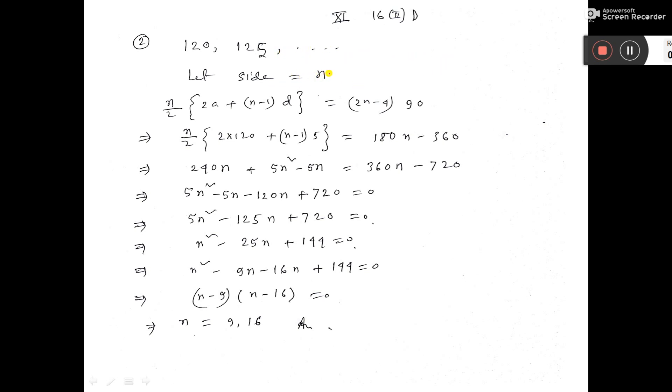So I consider n sides of that polygon. Then we can find the total sum of angles in two ways. One is 2n minus 4 into 90 degrees, and another is n by 2 into 2a plus n minus 1 into d.